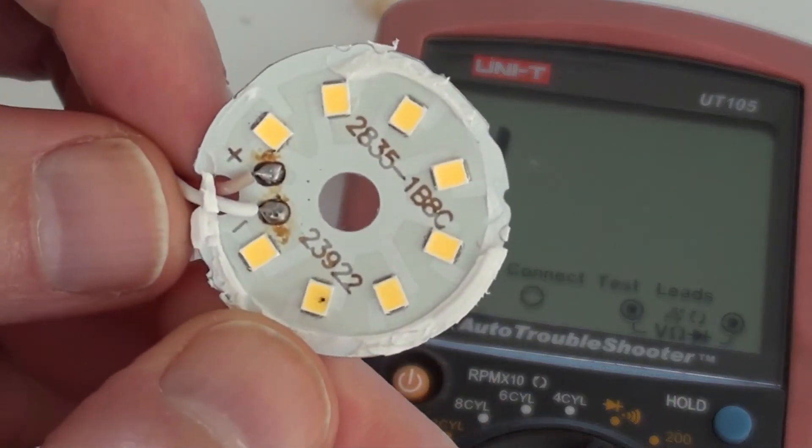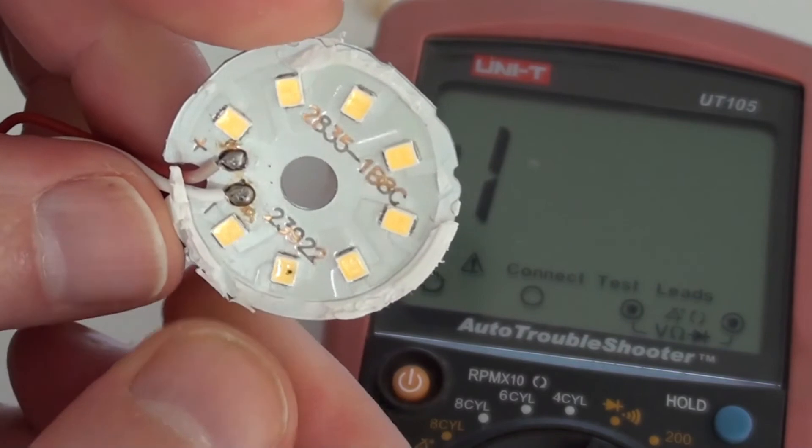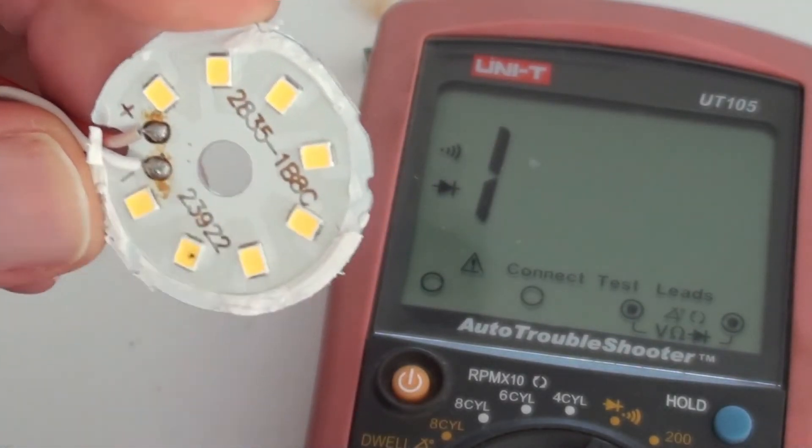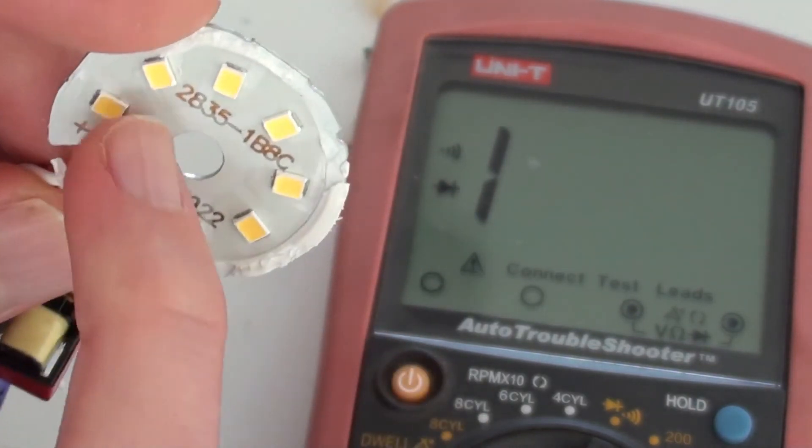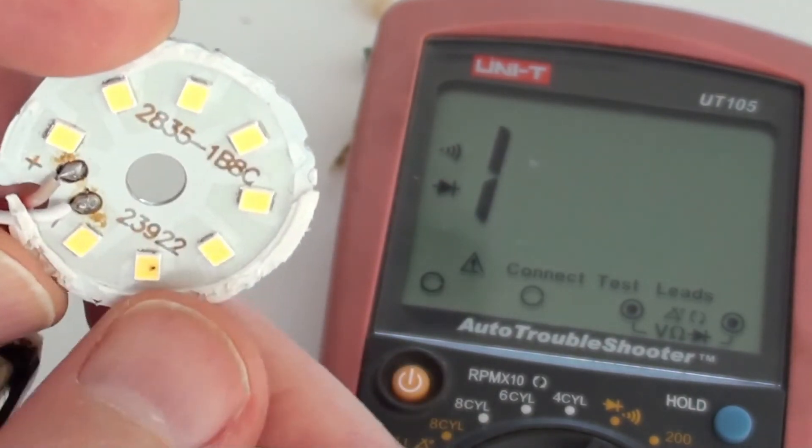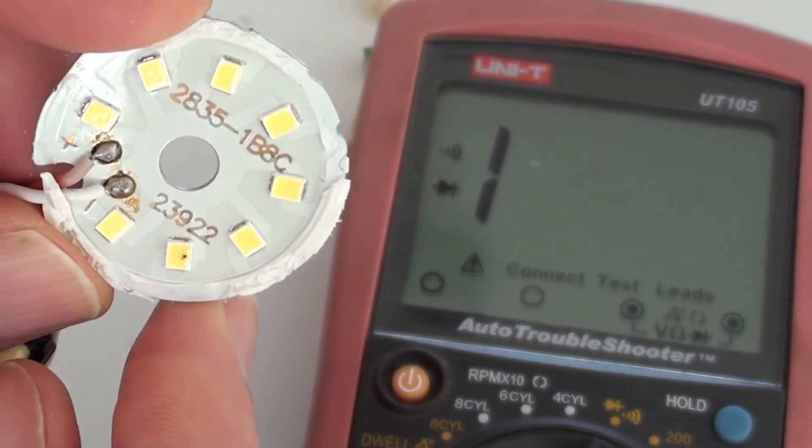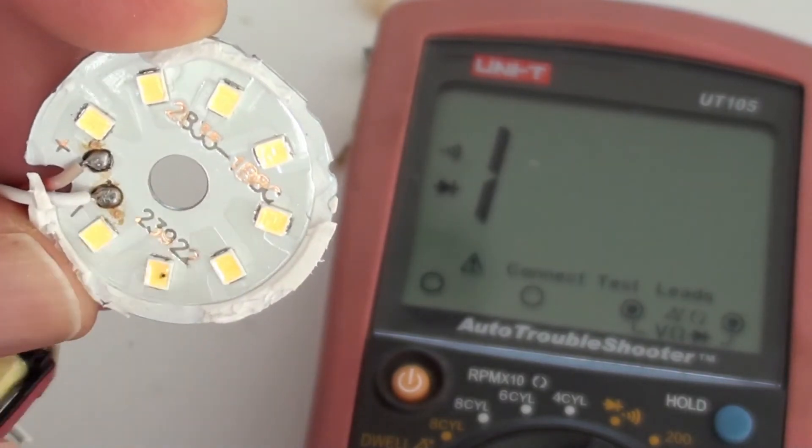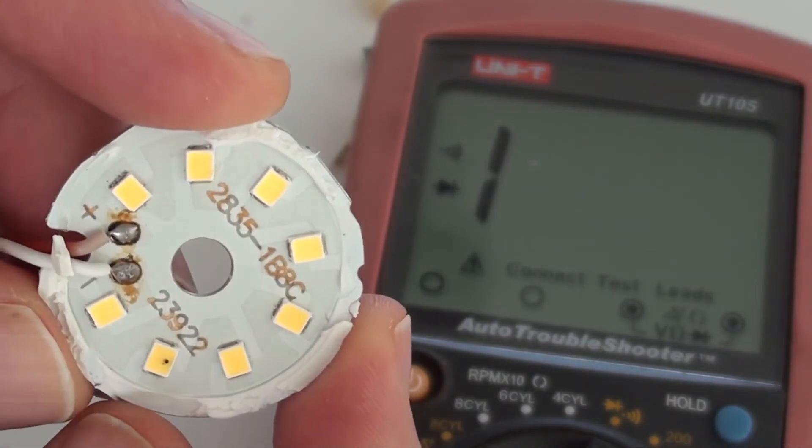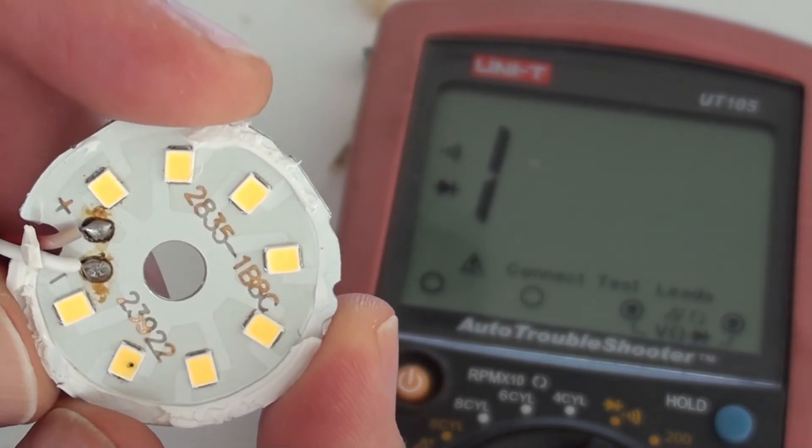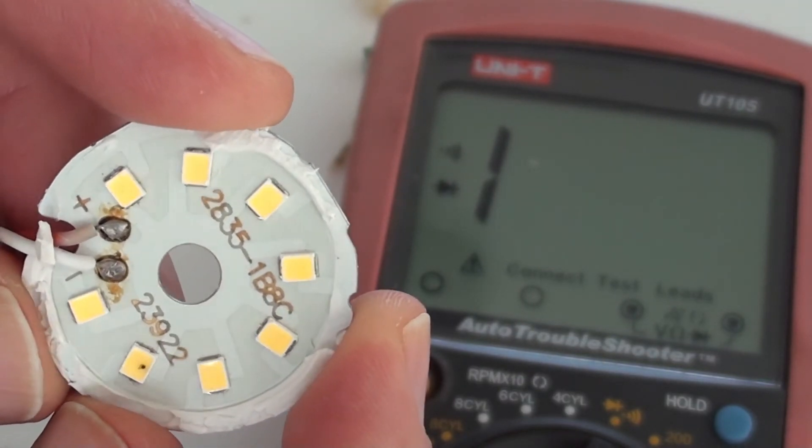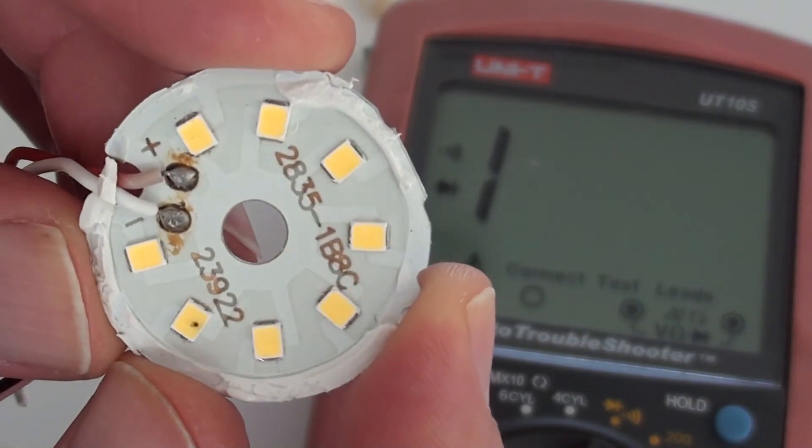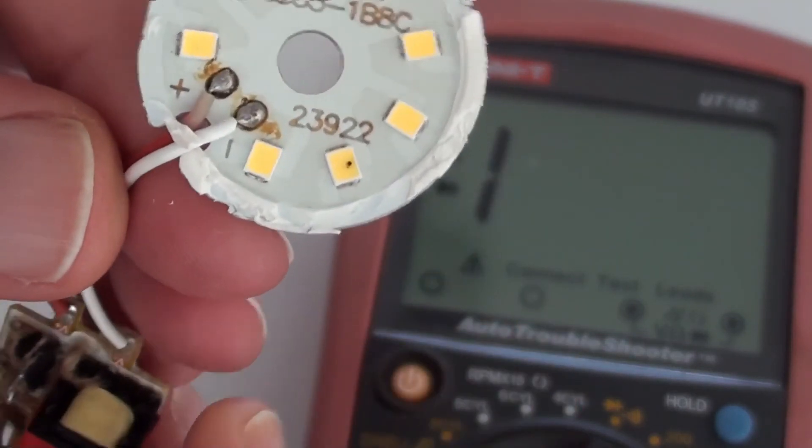You can just about see, if you catch the light right, you can just about see there's a kind of star pattern. The negative wire goes to this kind of central circle trace, which then has arms coming out to each of the eight LED chips. And the positive goes to the outer trace there, so they're all in parallel. And so one of them failing shouldn't have caused the whole thing to fail particularly, so something else must have happened.